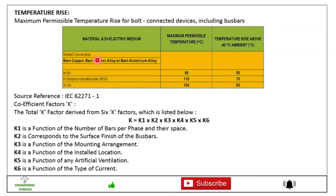Friends, then let's say for temperature rise, maximum permissible temperature rise for bolt connected devices including busbar. For material dielectric medium, for this bolted connection bare copper busbar or bare aluminum alloy busbar in air, maximum permissible temperature is 90 degree and temperature rise above 40 degree ambient permissible is 75. In oil 100, that means above 40 degree ambient it is 60 degree, and this is considered from the source reference IEC 62271 part 1.